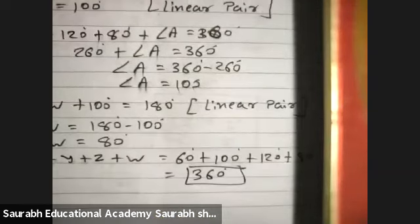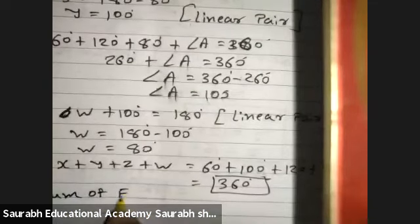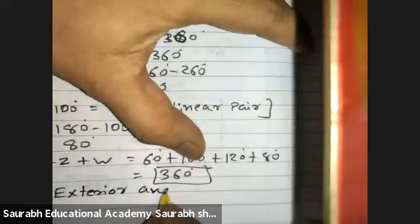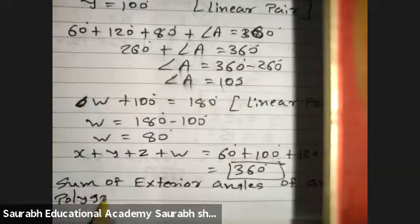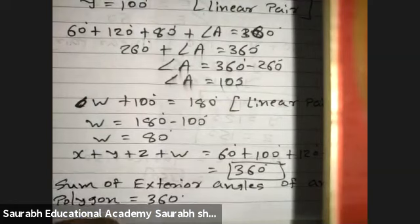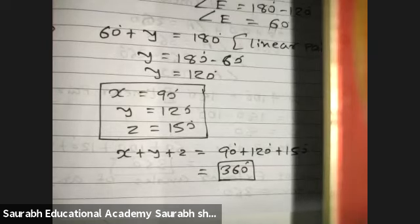What can you derive from this? A statement you can derive: the sum of exterior angles of any polygon is equal to 360 degrees. Most important! Sum of exterior angles of any polygon is 360. We have seen it here — it's 360. We also did the triangle, and XYZ was 360. Whether you take a pentagon, hexagon, or heptagon, the exterior angle sum will always be 360.